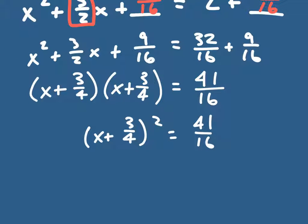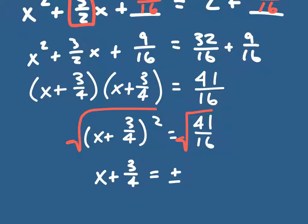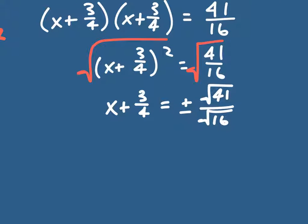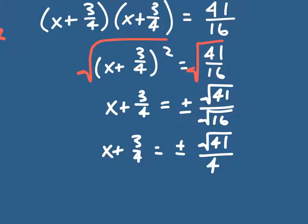Now I take the square root of both sides. On the left side I have x plus three-fourths, equal to plus or minus the square root of 41 divided by the square root of 16. When taking the square root of a fraction, I take the square root of the top and bottom separately. So that gives x plus three-fourths equals plus or minus the square root of 41 over 4, since the square root of 16 is 4.